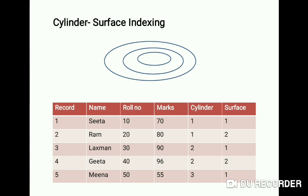Cylinder surface indexing is the simplest type of index organization. It is very useful for the primary key index of a sequentially ordered file. In a sequentially ordered file, the physical sequence of records is ordered by a key called the primary key. For example, role numbers arranged sequentially can be considered the primary key. The file is placed on the hard disk — the cylinders — and to locate a record, cylinder and surface are used.